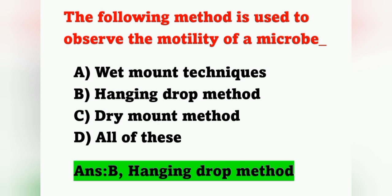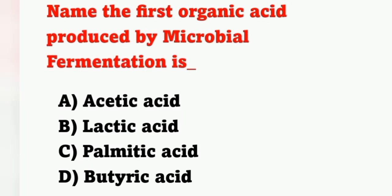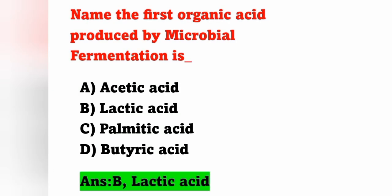Next question: name the first organic acid produced by microbial fermentation — option A: acetic acid, option B: lactic acid, option C: palmitic acid, option D: butyric acid. Which is the first organic acid produced by microbial fermentation? It is lactic acid. Option B is the correct answer.